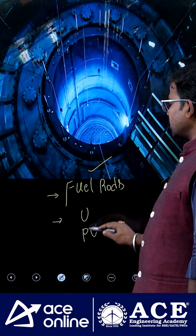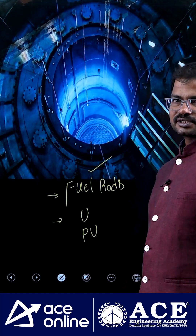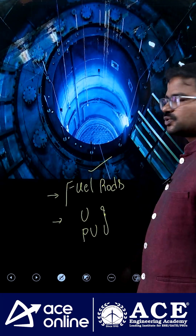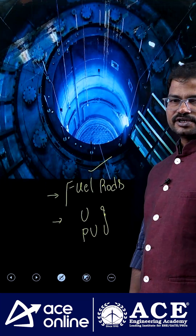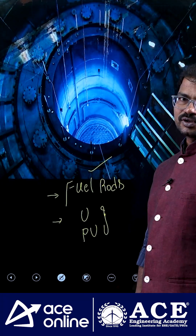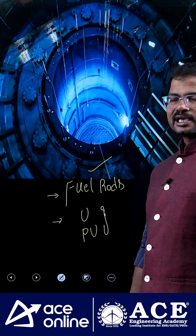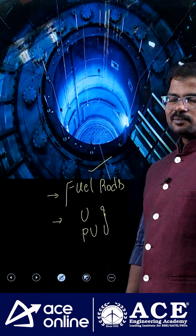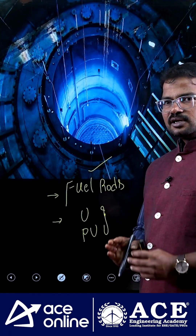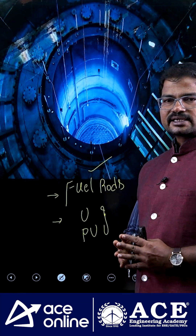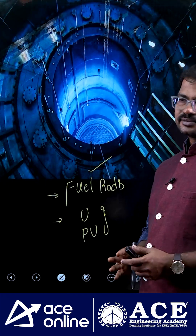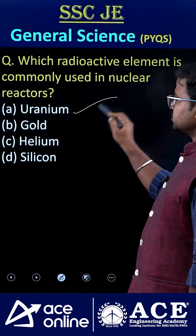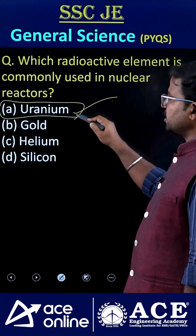In some reactors, plutonium can also be used. Especially in India, we are using these two types — uranium as well as plutonium. Of course, we have a bulk amount of thorium reserves, even though thorium-based reactors are not yet fully operational. So the correct answer is option A.